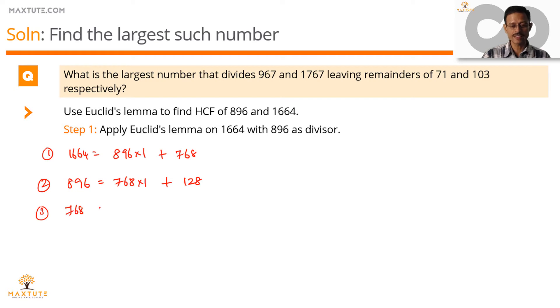This time on 768 with 128 as the divisor. 120 into 6 is 720. 8 into 6 is 48. 720 plus 48 is 768. So, it divides it exactly 6 times. Remainder is 0 in this case.